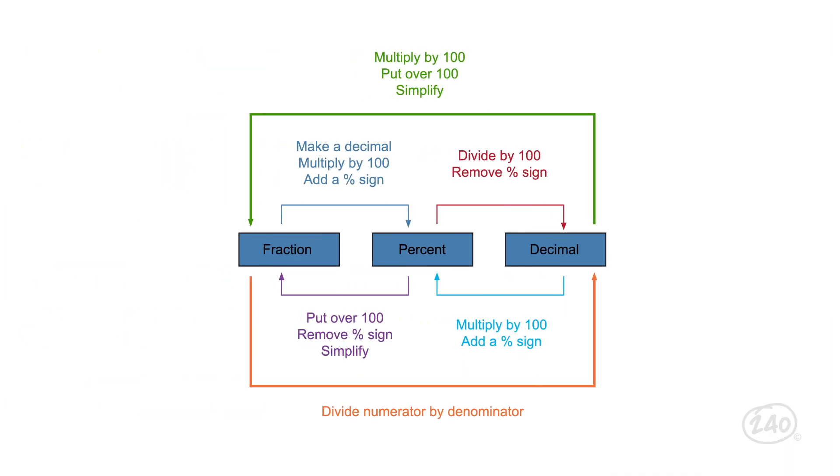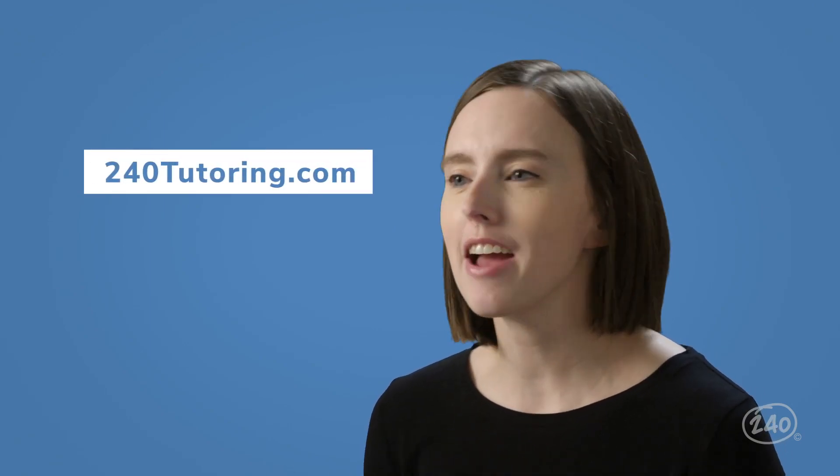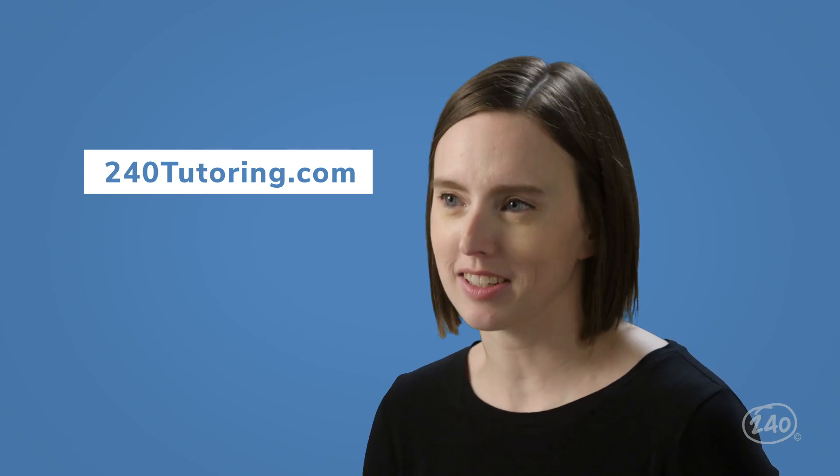On your test, you'll likely be given a value, for example, 6%. Then you'll be asked to convert that number into a fraction or decimal. Our study guide gives you helpful flowcharts like this one to help you solve the problem. In this case, we'll start with the 6% and follow the arrow to the fraction box. This tells us that to go from a percent to a fraction, we need to put the number over 100, remove the percent sign, and simplify. So 6% over 100 becomes 3 over 50, meaning 6% is equal to 3 fiftieths. Want some more practice? Check out our study guide. It has everything you need to pass the test.